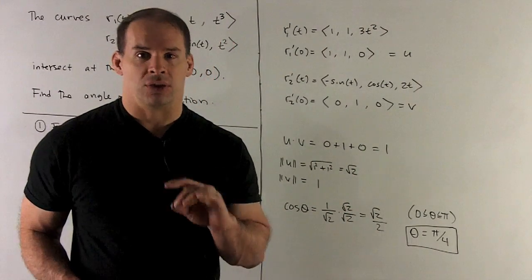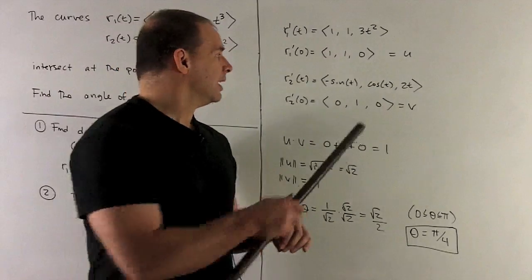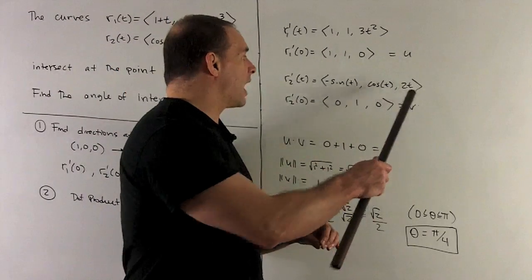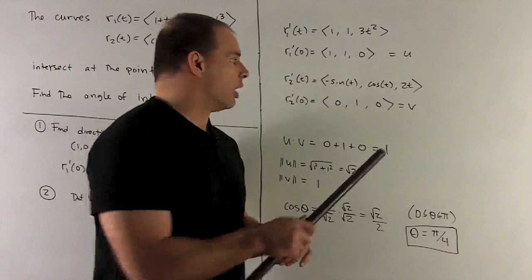For R2, take the derivative. I get (minus sine, cosine, 2t). We put 0 into there. I get the vector (0, 1, 0). I'll call that v.